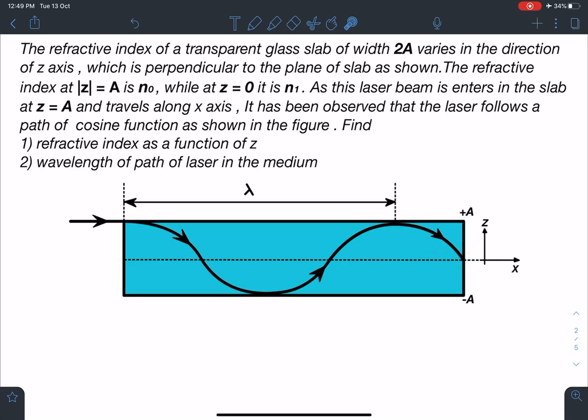As this laser beam is entering in the slab at z equal to a and travels along x-axis, it has been observed that the laser follows a path of cosine function as shown in the figure. Find number 1, the refractive index as a function of z, and number 2, wavelength of the path of laser in the medium.